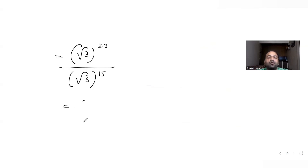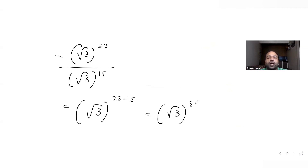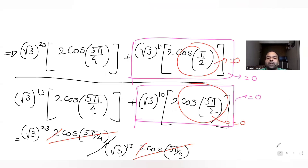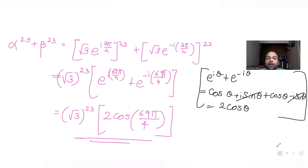Simplifying: √3^23 / √3^15 = √3^(23−15) = √3^8 = 3^(8 × 1/2) = 3^4 = 81. So the answer is 81.